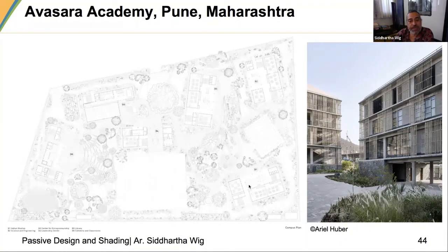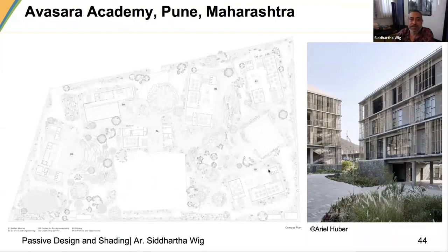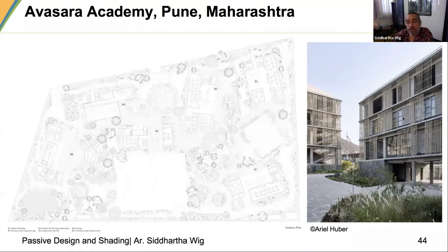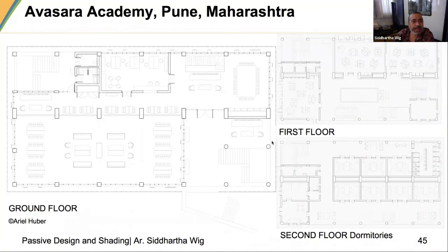In the plan, north is in this direction. These are the three main teaching blocks — for Indian Studies, Science Engineering, and Centre for Entrepreneurship. The highest point of the site is here; water flows to the lowest point where after reed beds all the wastewater is collected and used for horticulture. The buildings are spaced apart to allow for ventilation. Looking at the plans, they are very open plans allowing a lot of ventilation and natural light.